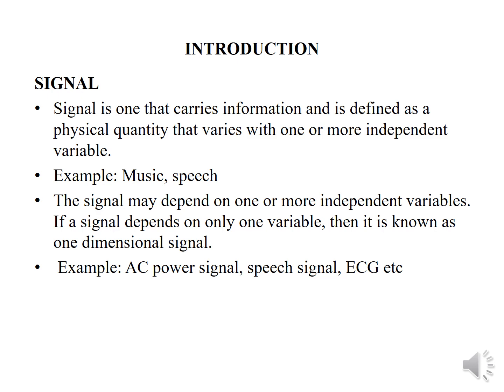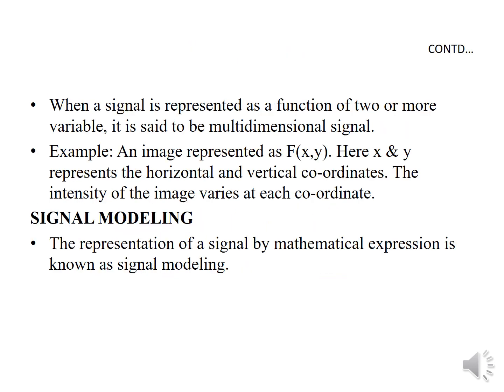Examples of one-dimensional signals are AC power signals and speech signals. When the signal is represented as a function of two or more variables, it is said to be a multidimensional signal. For example, an image represented as f(x, y), where x and y represent the horizontal and vertical coordinates and the intensity of the image varies at each coordinate.